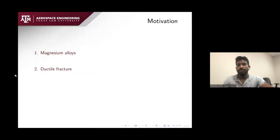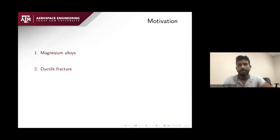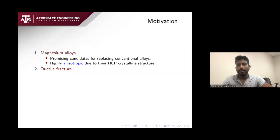A little bit of motivation: magnesium alloys have been gaining attraction over the last few years, especially because of their high strength and low weight properties. They are promising candidates for replacing conventional alloys in automotive and aerospace sectors. However, they have very little ductility because of their highly anisotropic properties.